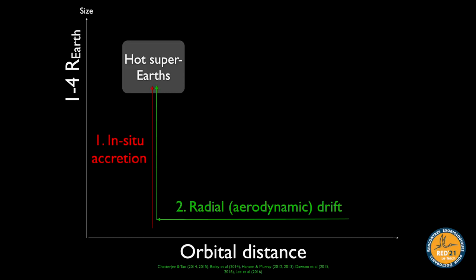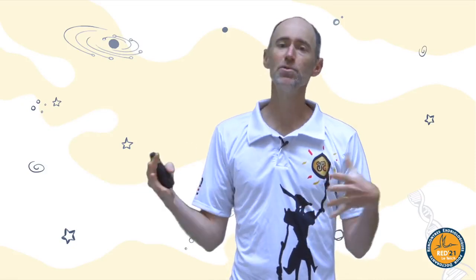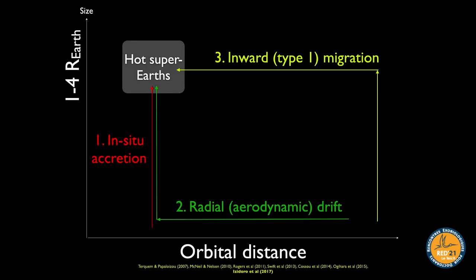Another idea is that planets grew mostly where they are, but there wasn't enough material there originally, so their building blocks were supplemented by small objects — like the pebbles we discussed — that drifted inward from further out and then concentrated close to the star, providing enough material to grow planets. I'll call this the drift model.